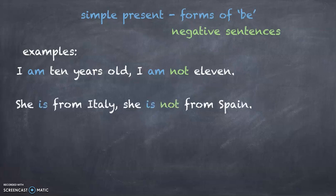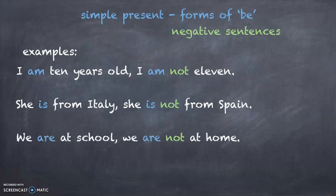She is from Italy, she's not from Spain. 'Is' is the positive form, 'is not' is the negative form. And we are at school, we are not at home. Again, 'are' is the positive form and 'are not' is the negative sentence of 'be'.